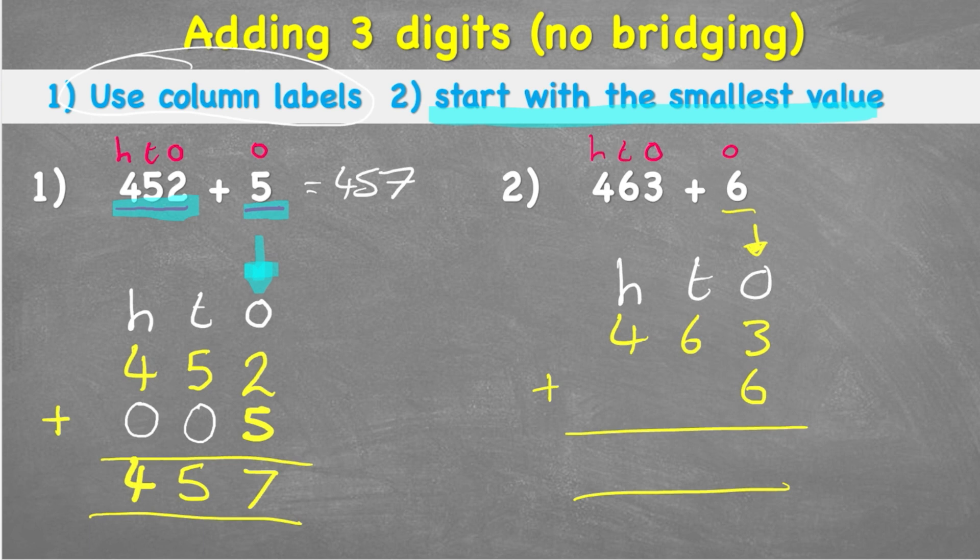3 add 6 is 3, 4, 5, 6, 7, 8, and 9. So I get an answer of 9.